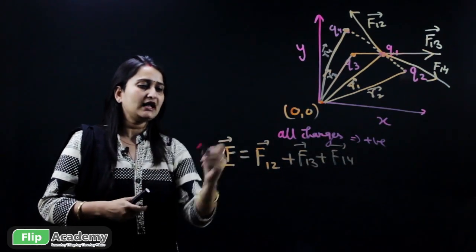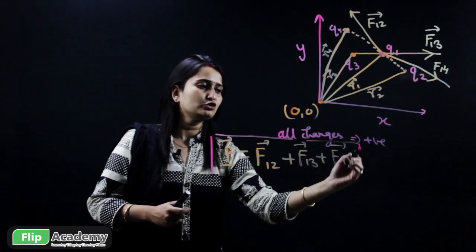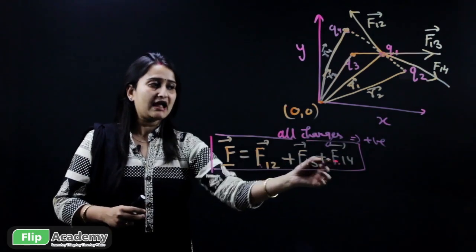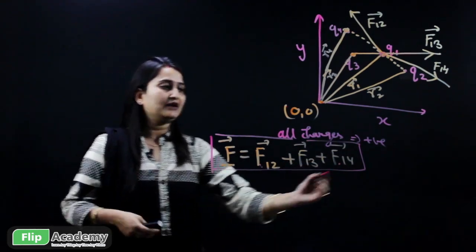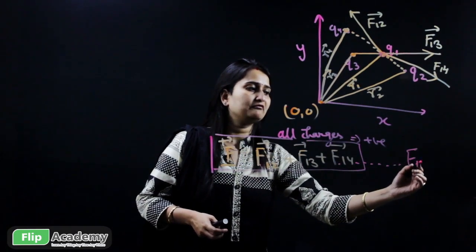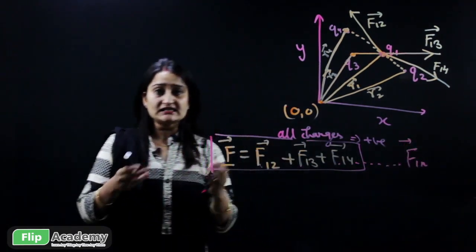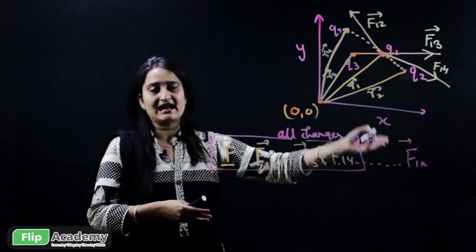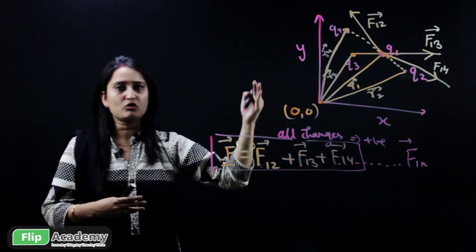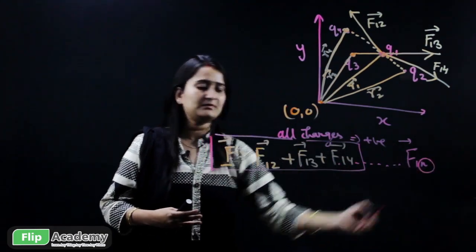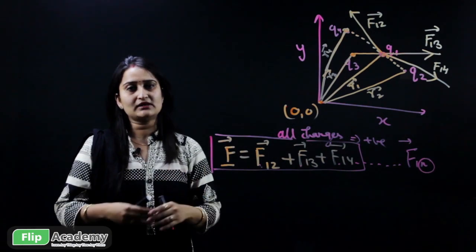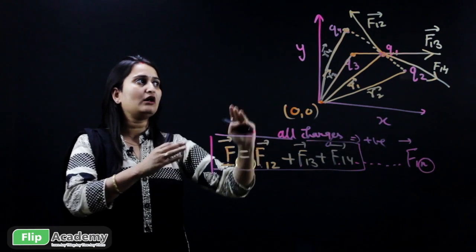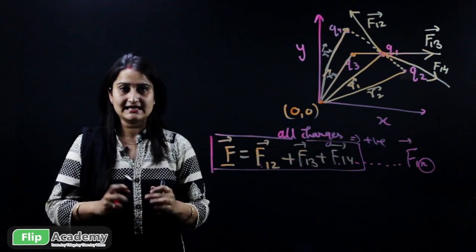This is the principle of superposition. F12 is one force, F13 is another force, and F14 is the third force, and it goes on till F1n, where n is an integer value. You can increase the number of forces from 2, 3, 4, 5, 6, up to 100 and so on. That is why it is represented with the integer value n. Based on this principle, we are going to solve the diagram.